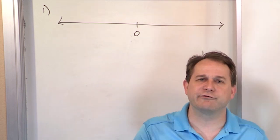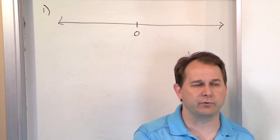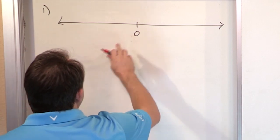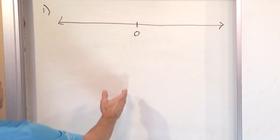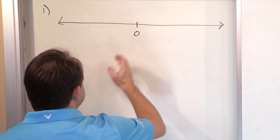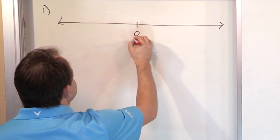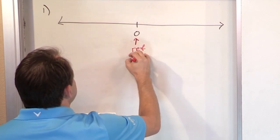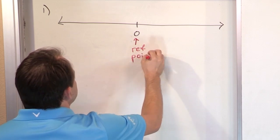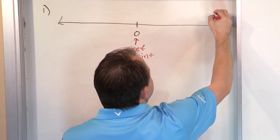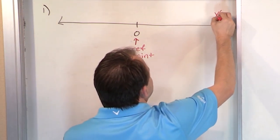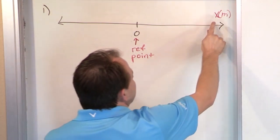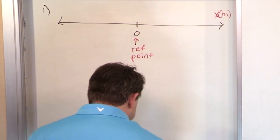You can't reconstruct my motion unless you know where the starting point is. So the starting point in all of these situations in physics is the origin — it's the reference point. We call it x is equal to zero. This is what we call the reference point, also called the origin. And of course, this is a graph of x, which we're going to say is in meters — the parentheses just mean we're measuring x in meters.